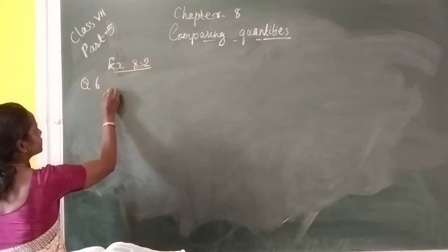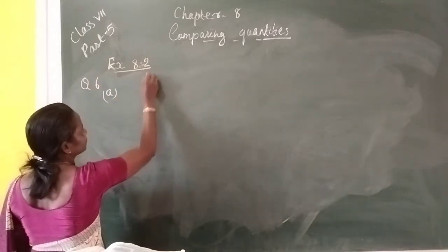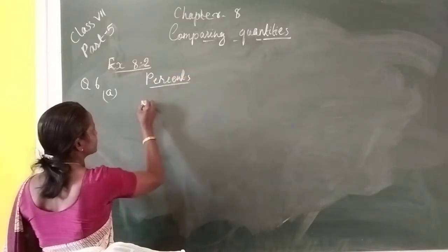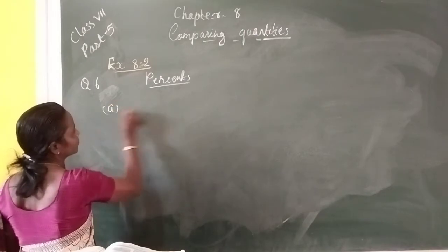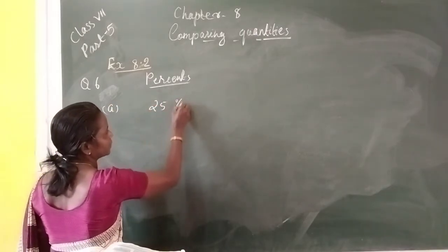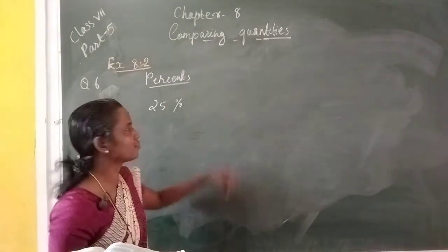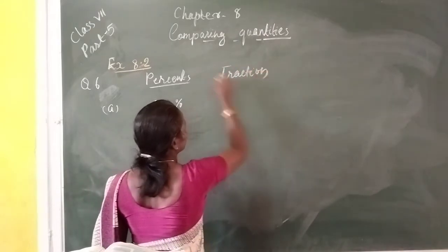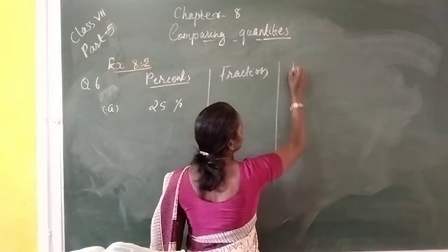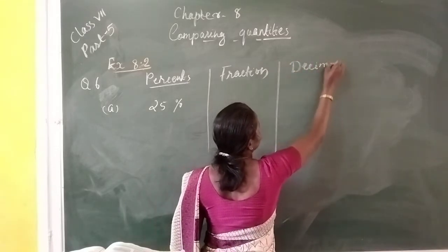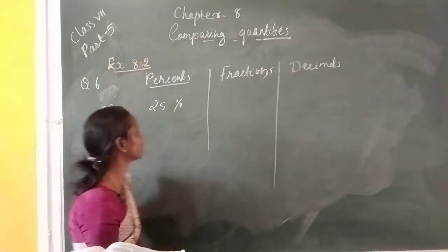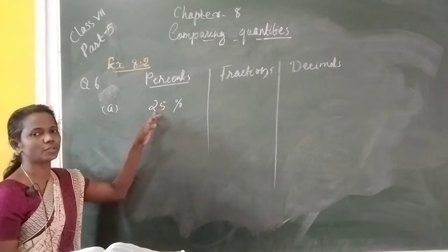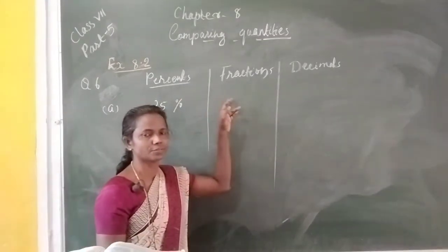Question number 6a: 25 percentage. First, you convert into fraction form, then we convert the fraction to decimal. So the first question: how many percentage? 25 percentage. This 25 percentage, convert into fraction — means fraction form.